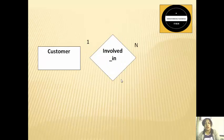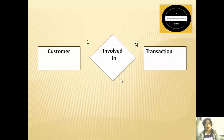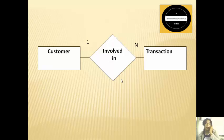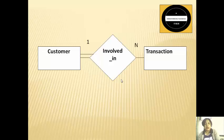Next we talk about the relationship between customer and transaction. While doing payments, these two entities are involved. One customer can do multiple transactions but one transaction can be done by only one customer, so the association is one to many. A customer is a mandatory participant in the transaction because while making a payment, the customer has to be compulsorily present.